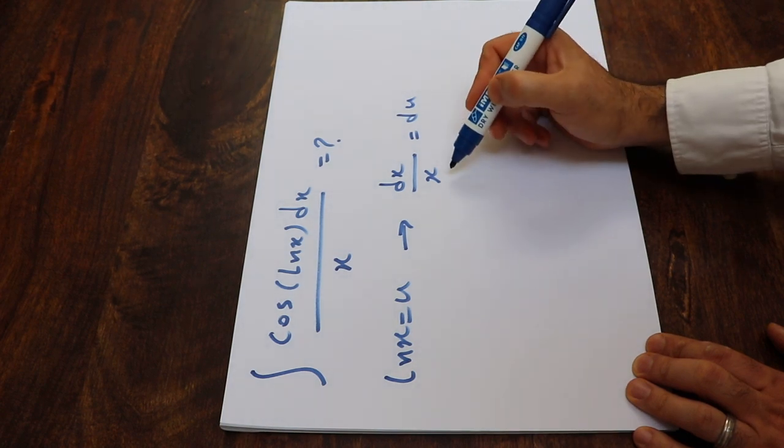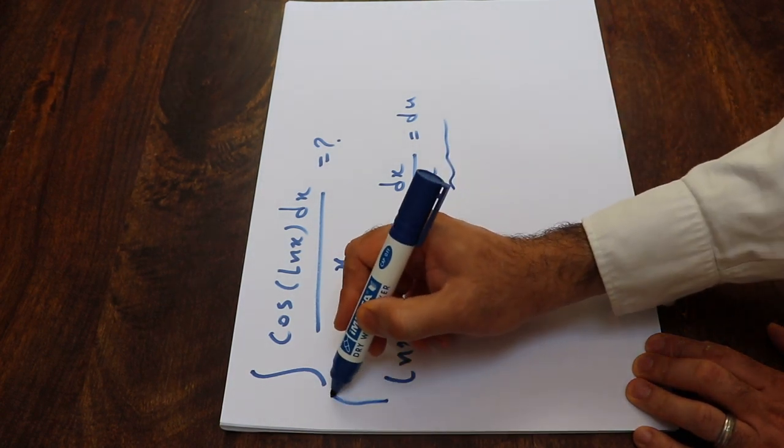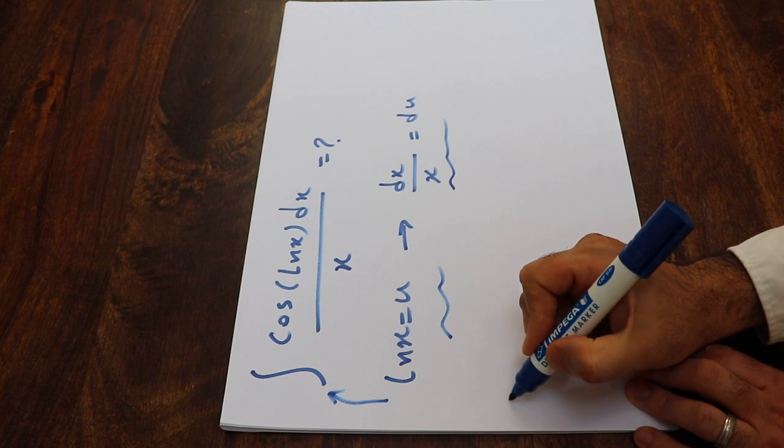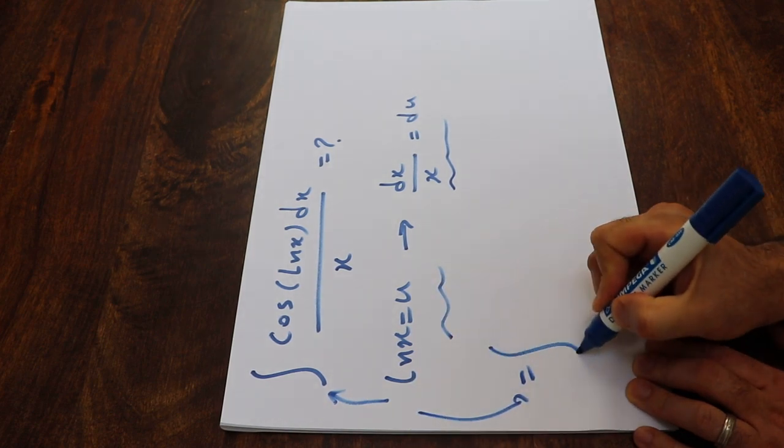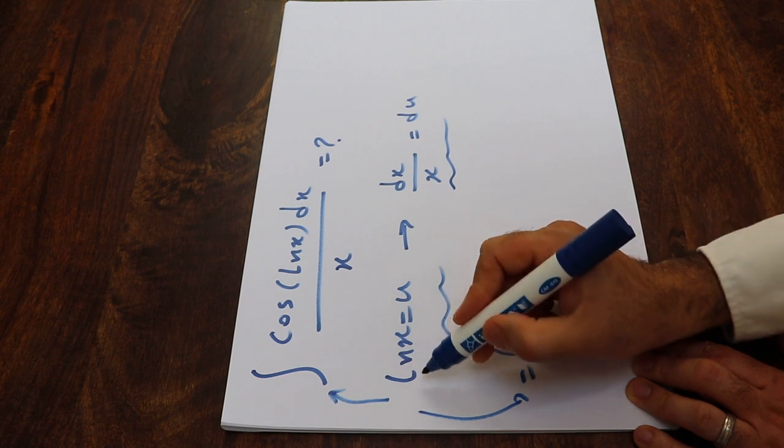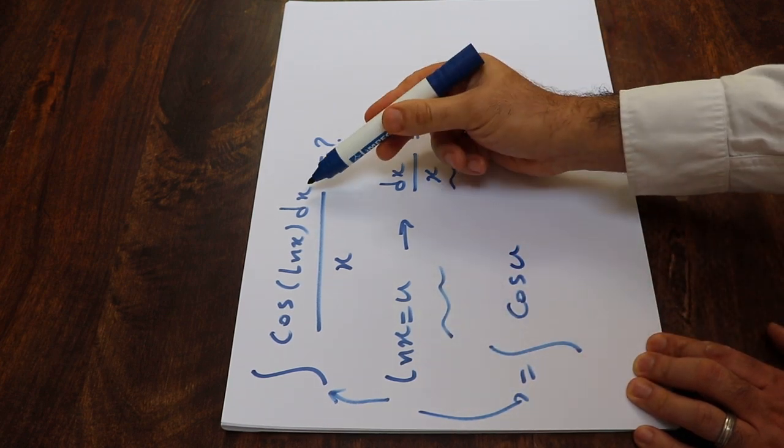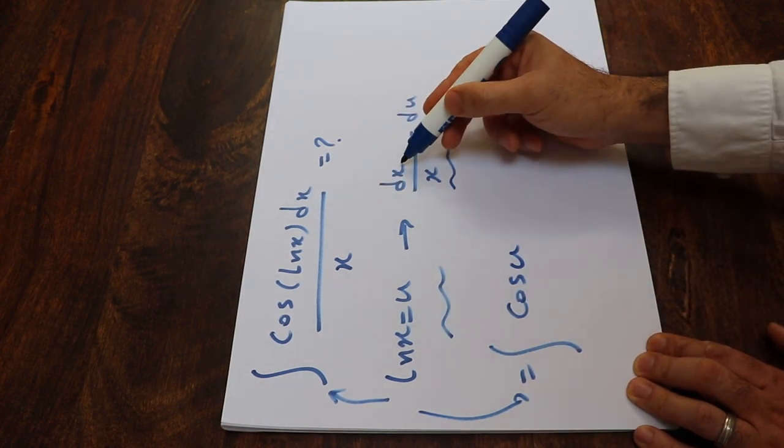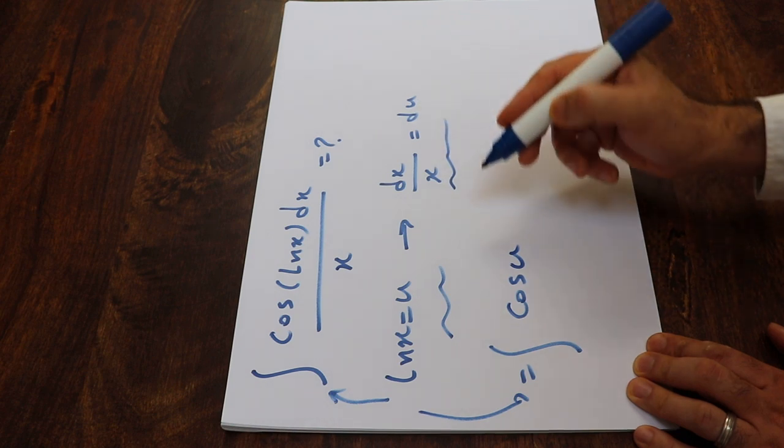All you need to do here is substitute this expression into this integral. If you do that, you will get this integral equal to cosine u. Instead of ln(x), I write u, and instead of dx divided by x, I simply write du.